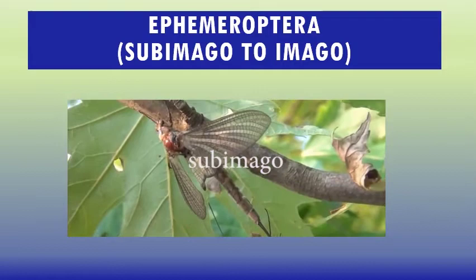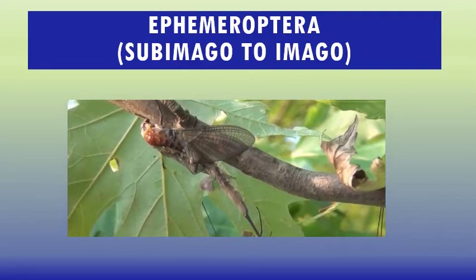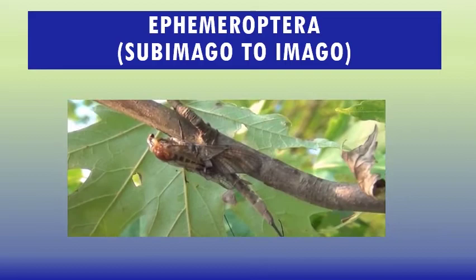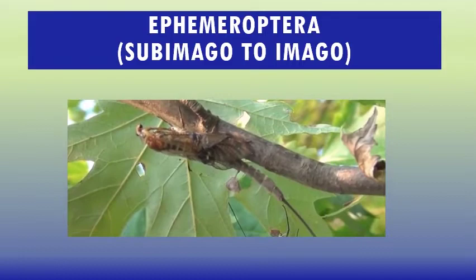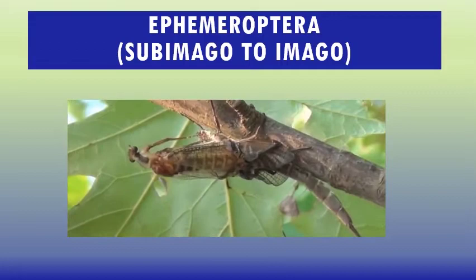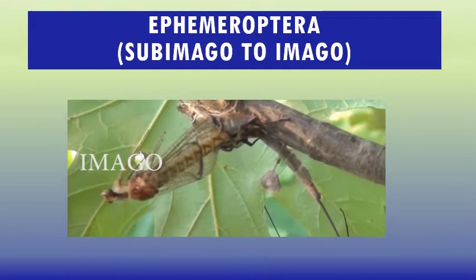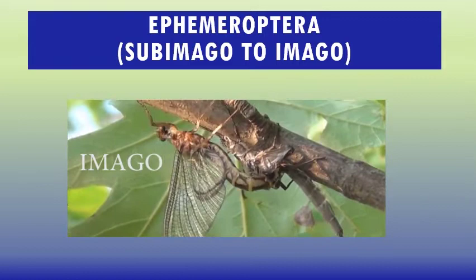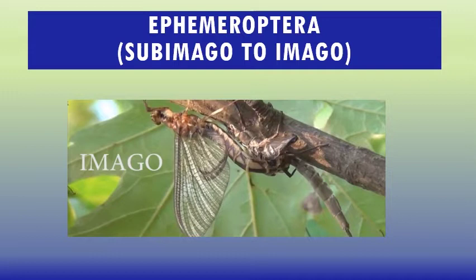The final molt of the nymph is not to the full adult form but to a winged stage called a sub-imago, which physically resembles the adult but is usually sexually immature and duller in color. Sub-imagos are generally poor flyers and typically lack the color pattern used to attract mates. After a period usually lasting one or two days, but in some species only a few minutes, the sub-imago molts into the imago.